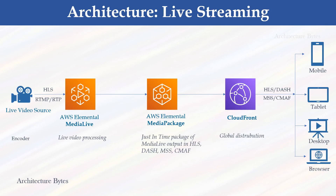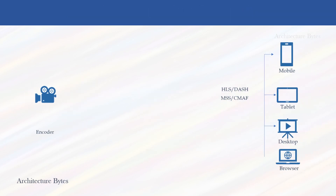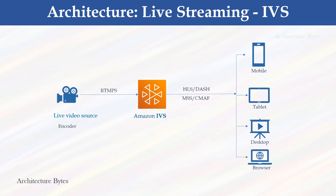By now, we already understand how live streaming can be implemented. This is a recap: ingest video stream, transcode, package and deliver. Here's an alternative way of live streaming by using Amazon IVS or Interactive Video Service — a simpler, easy-to-set-up solution with optional interactive experience.